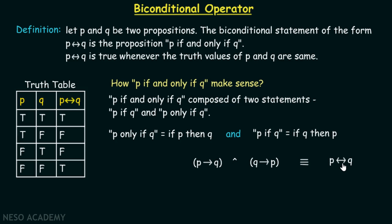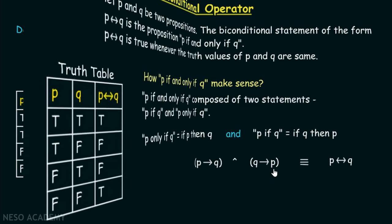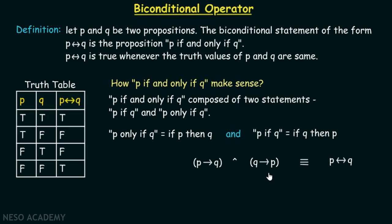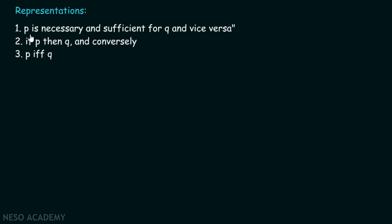This biconditional operator comes from two implication operators — a forward arrow from P to Q and a backward arrow from Q to P. We can represent the biconditional statement in different ways: P if and only if Q, P is necessary and sufficient for Q, Q is necessary and sufficient for P, or if P then Q and conversely.